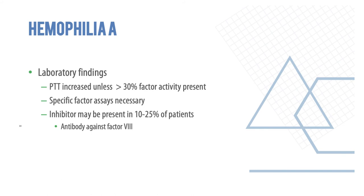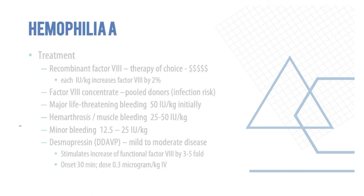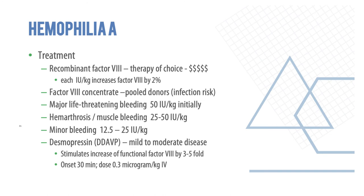Lab findings in hemophilia A: aPTT is increased unless 30% of factor activity is present. Specific factor assays are necessary as an inhibitor may be present in 10–25% of patients, who may have antibodies against factor 8. Treatment is factor 8 replacement — this is the therapy of choice.